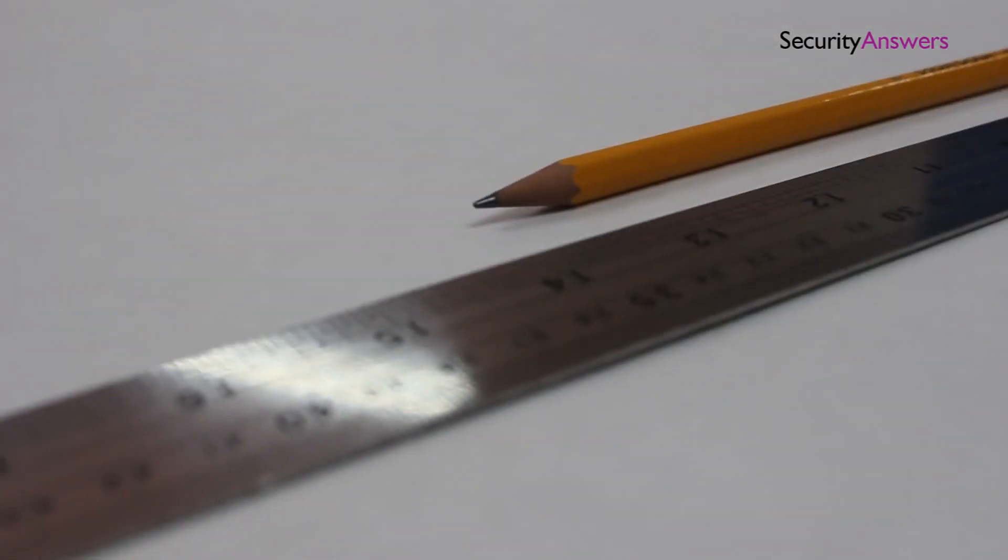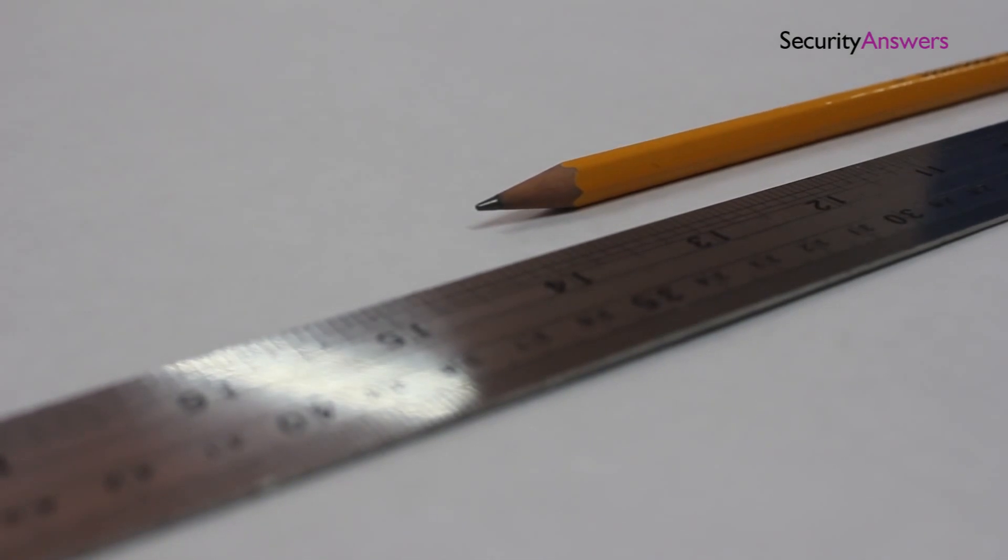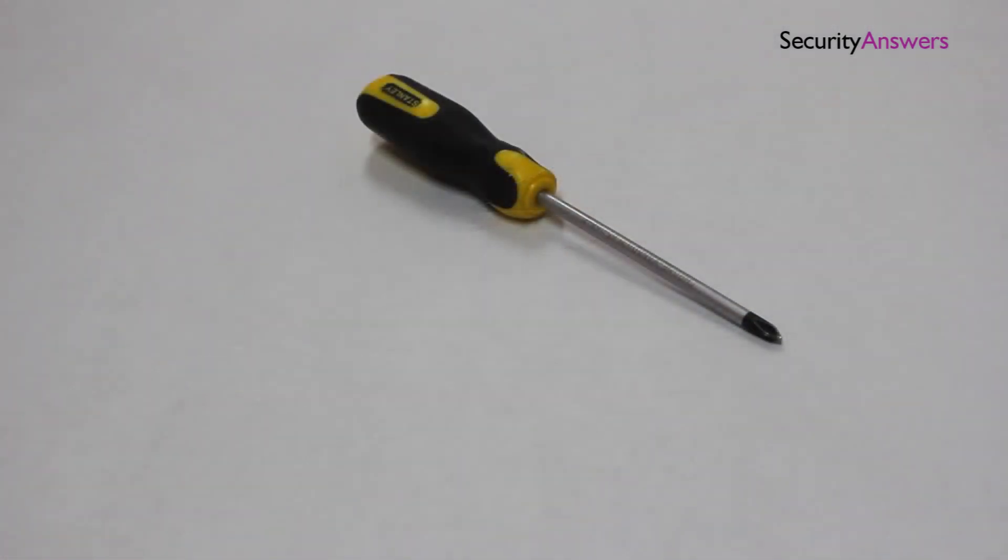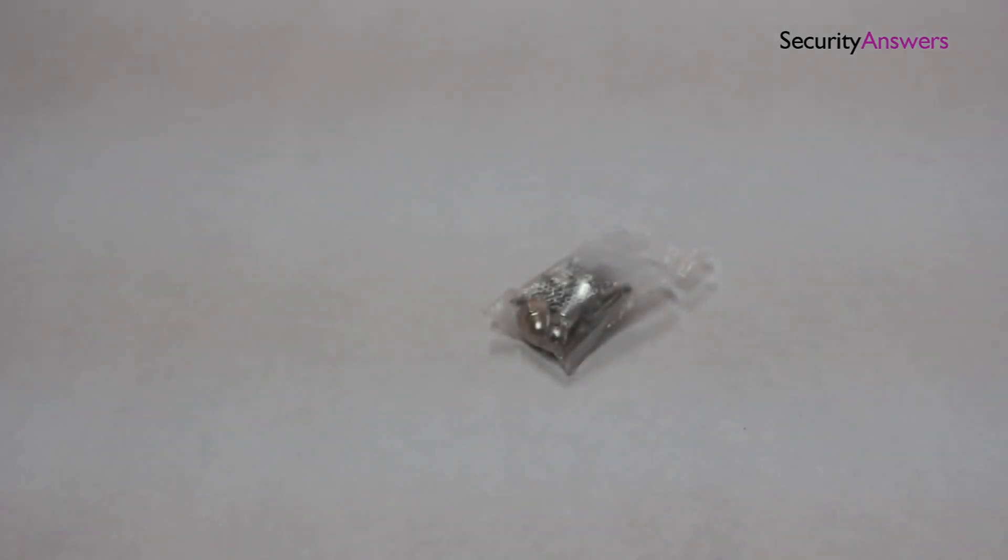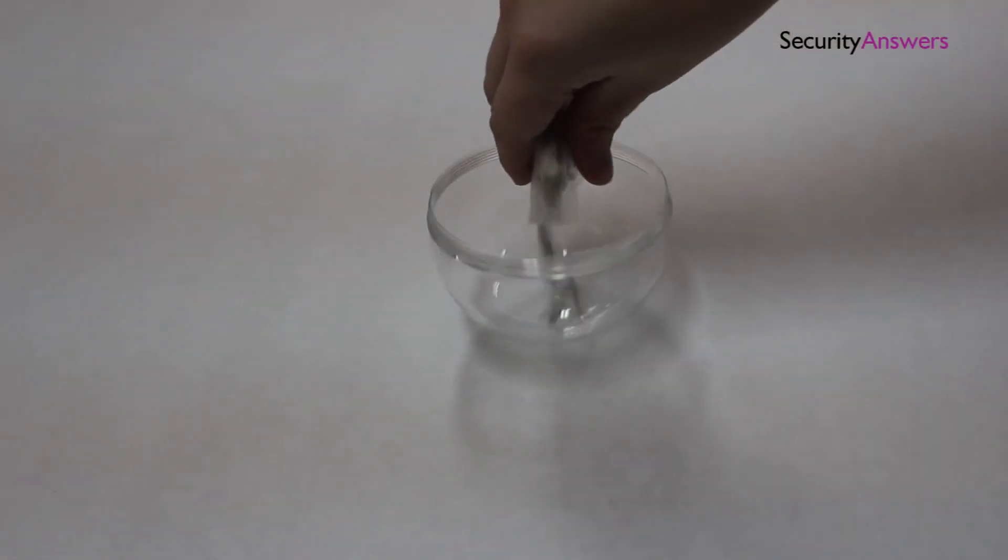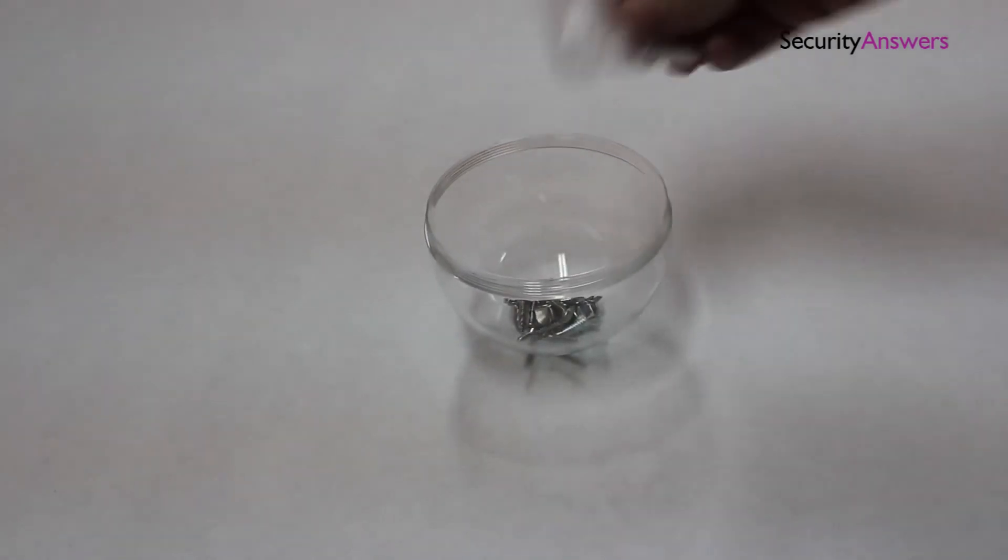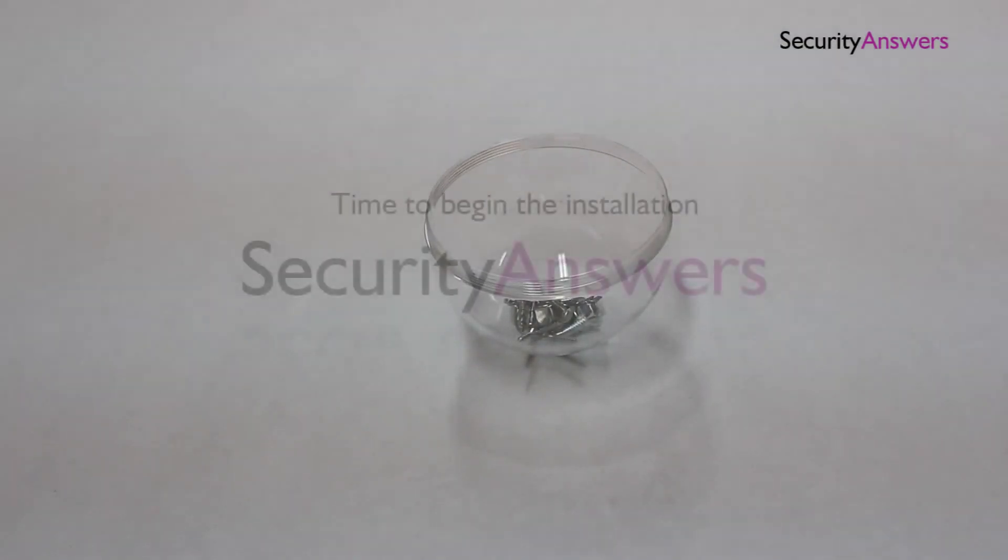A ruler and pencil for marking the position of the locks. A phillips screwdriver. Each lock should come with all the correct screws for a proper installation. We place our screws in a small container to ensure we do not misplace any of the components.